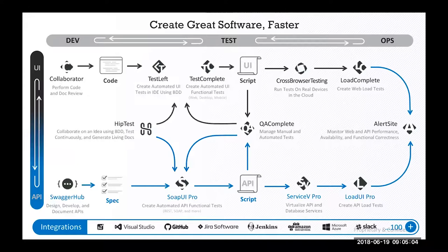We also support collaboration. HipTest is a collaborative platform that helps teams first collaborate on ideas using behavior driven development and also test their code continuously, and generate living documentation from the tests. That mainly addresses agile and DevOps teams. For teams that use a more traditional approach to QA, we also have QA Complete to address their needs.